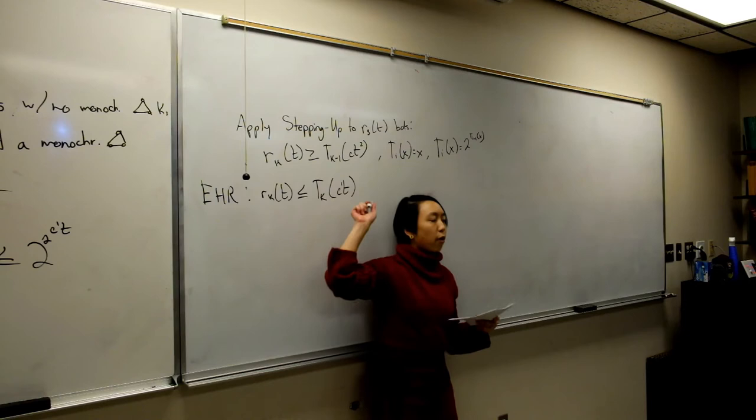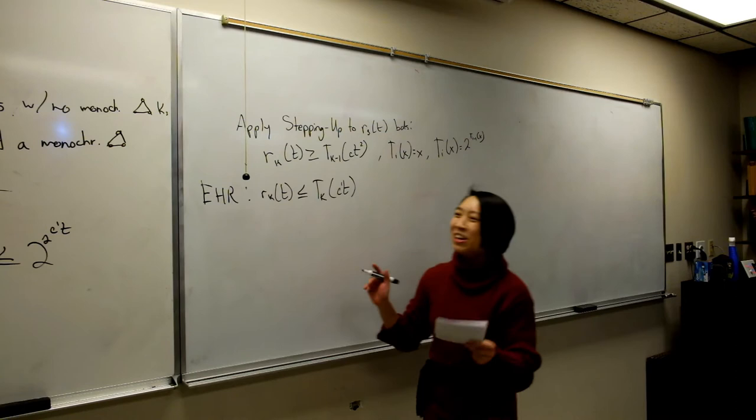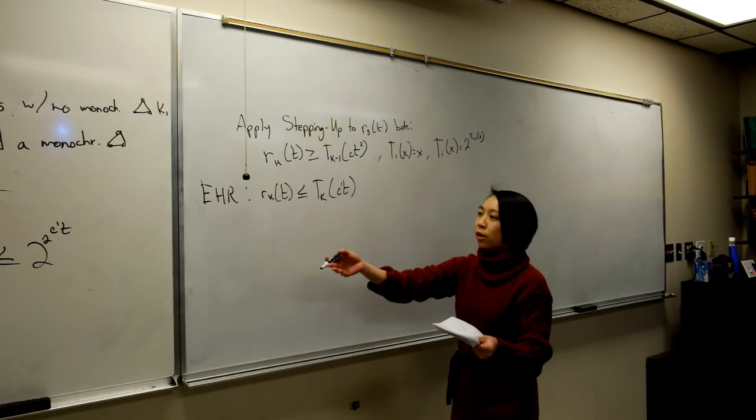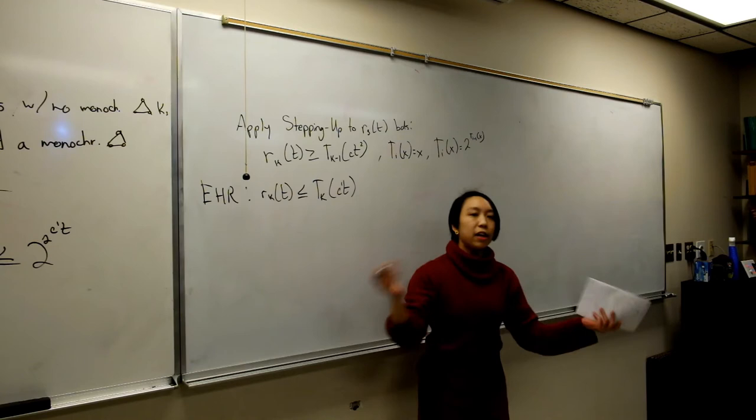Solving this problem would have really big implications. We certainly haven't closed this gap, but one avenue people have taken is to generalize the notion of Ramsey numbers. One natural generalization is to use more colors and see what happens.